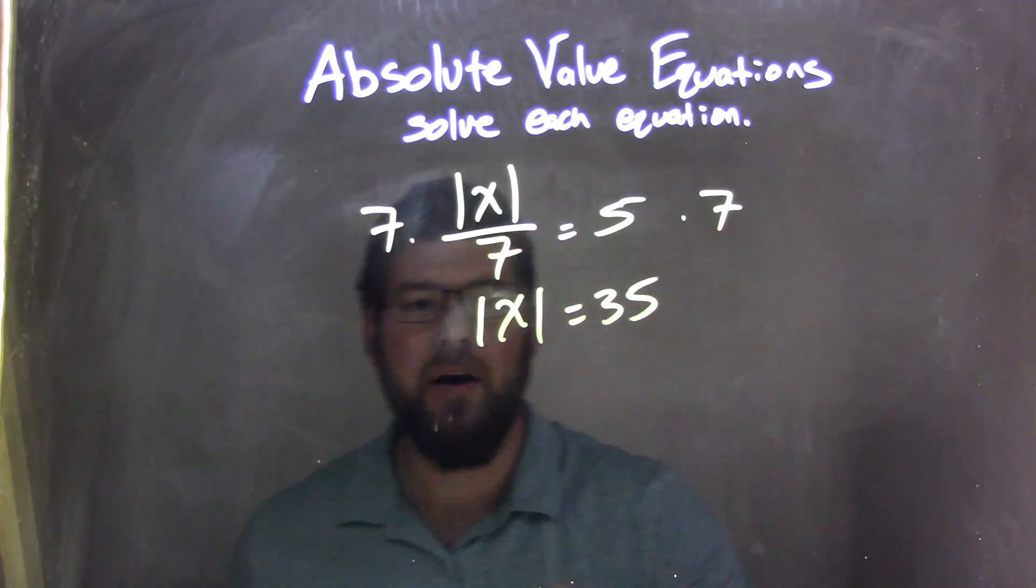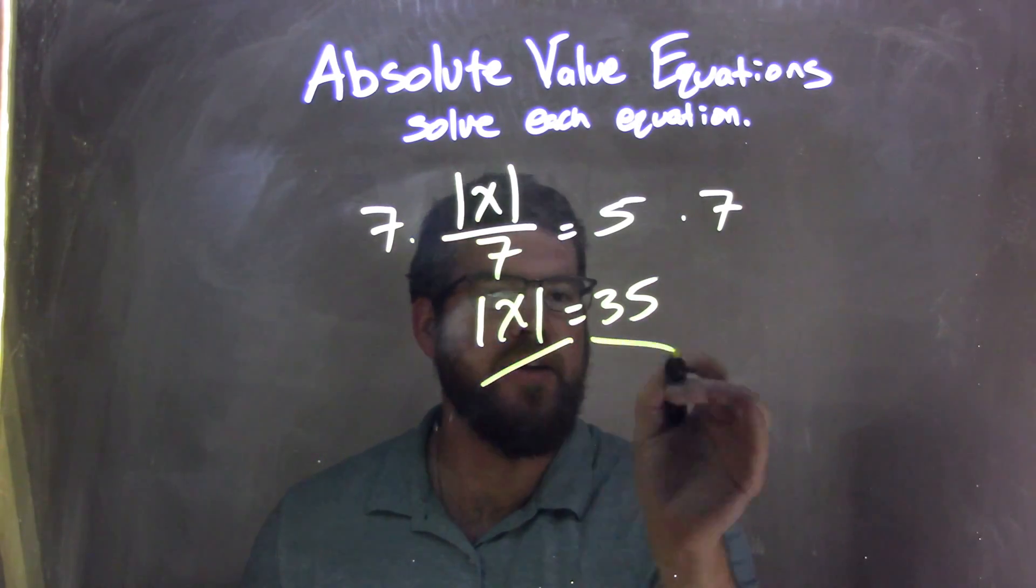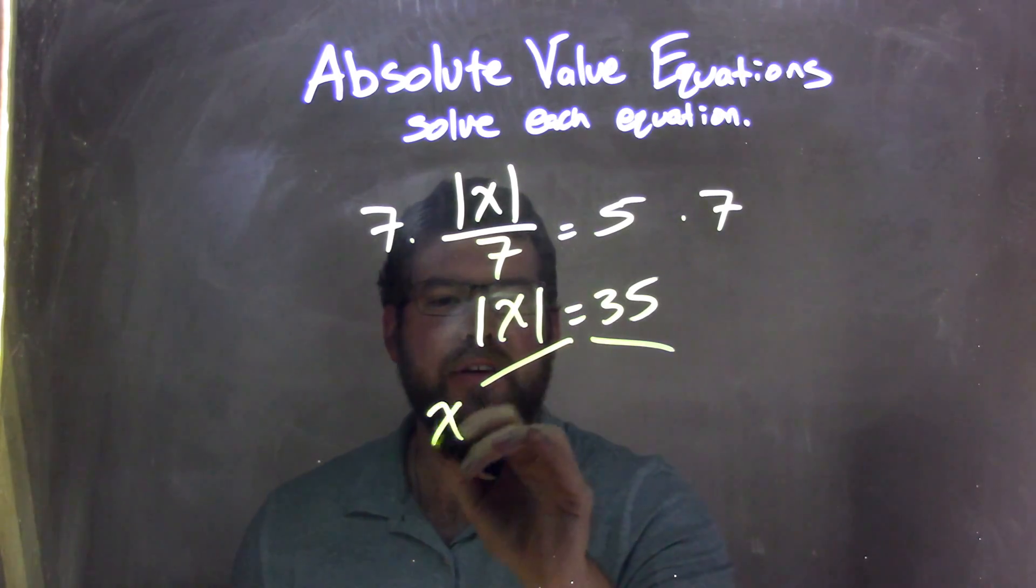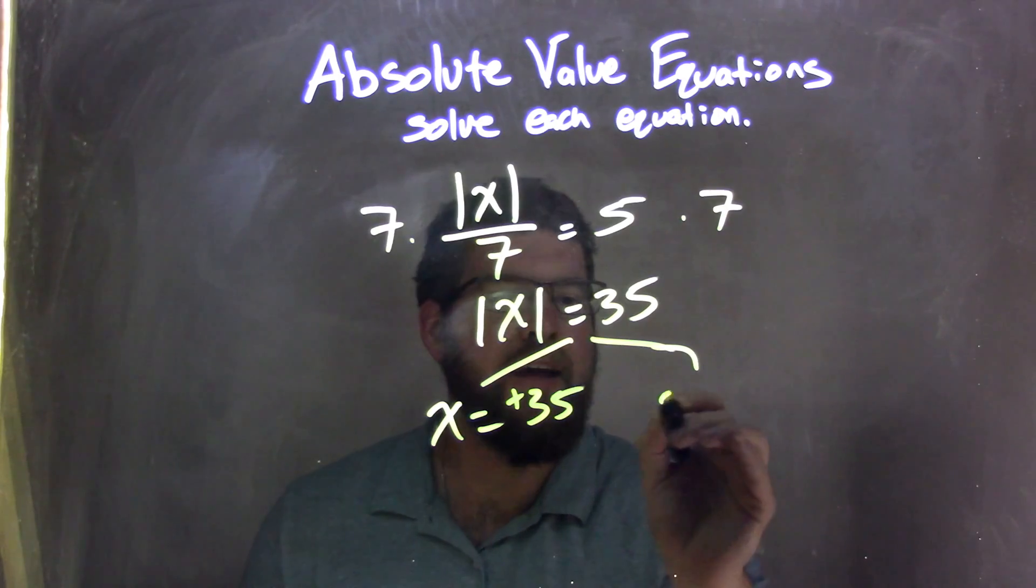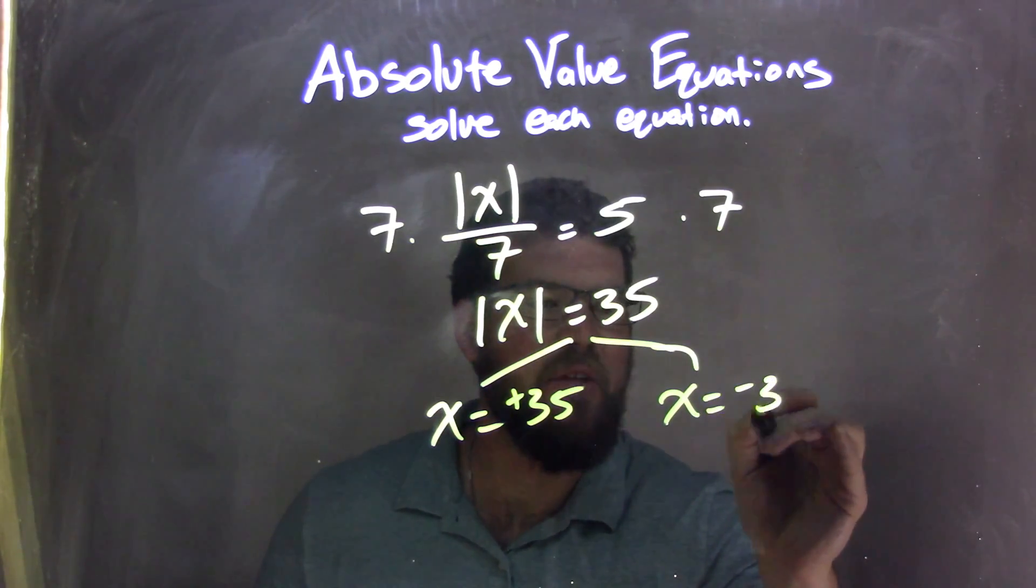From there, the absolute value is already isolated. I can break this apart into two equations. x equals positive 35, and x equals a negative 35.